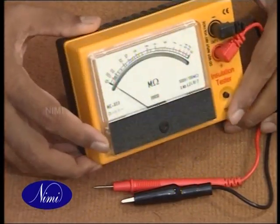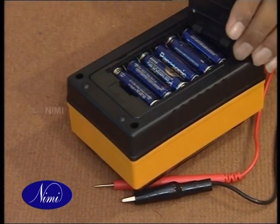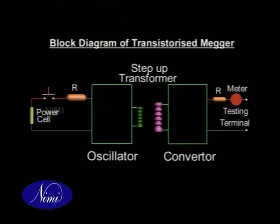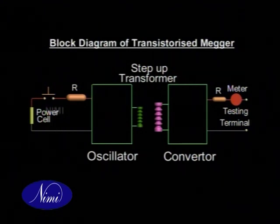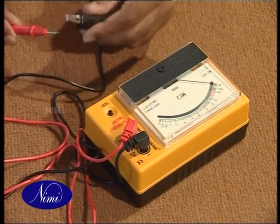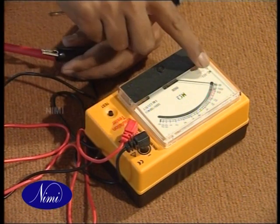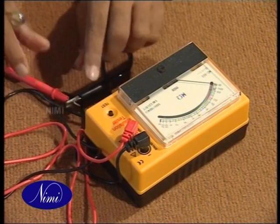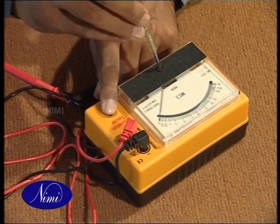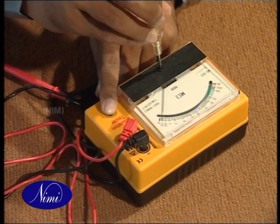A transistorized mega is an electronic insulation tester. It converts low DC voltage from a dry cell to high DC voltage by using an oscillator, step-up transformer, and a converter. The voltage generated at the test terminals is in the order of 250, 500, or 1,000 volts depending upon the design. A moving coil meter with a high resistance in series forms a series ohmmeter and has a dial graduated in megohms, similar to the conventional mega. Zero adjustment can be made to compensate for voltage variation as the cell discharges, by shorting the terminals and setting zero before any measurement.